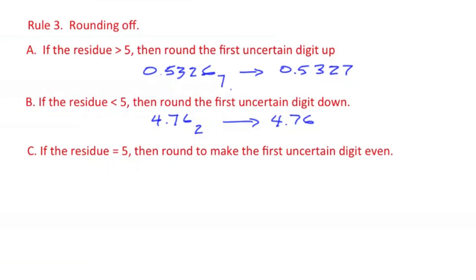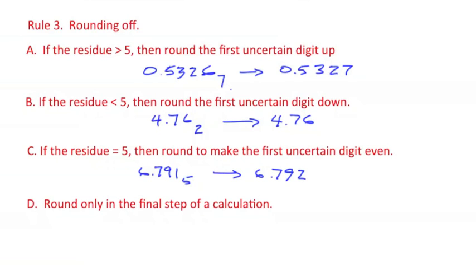If the residue is exactly five, we round so that the uncertain digit is even. So if we have something like 6.7915, and the first uncertain digit is the one, in this case, we round up to make the result or the last digit even. This way, we round up sometimes and down sometimes. Try to avoid biasing by rounding only in the final step of a calculation.